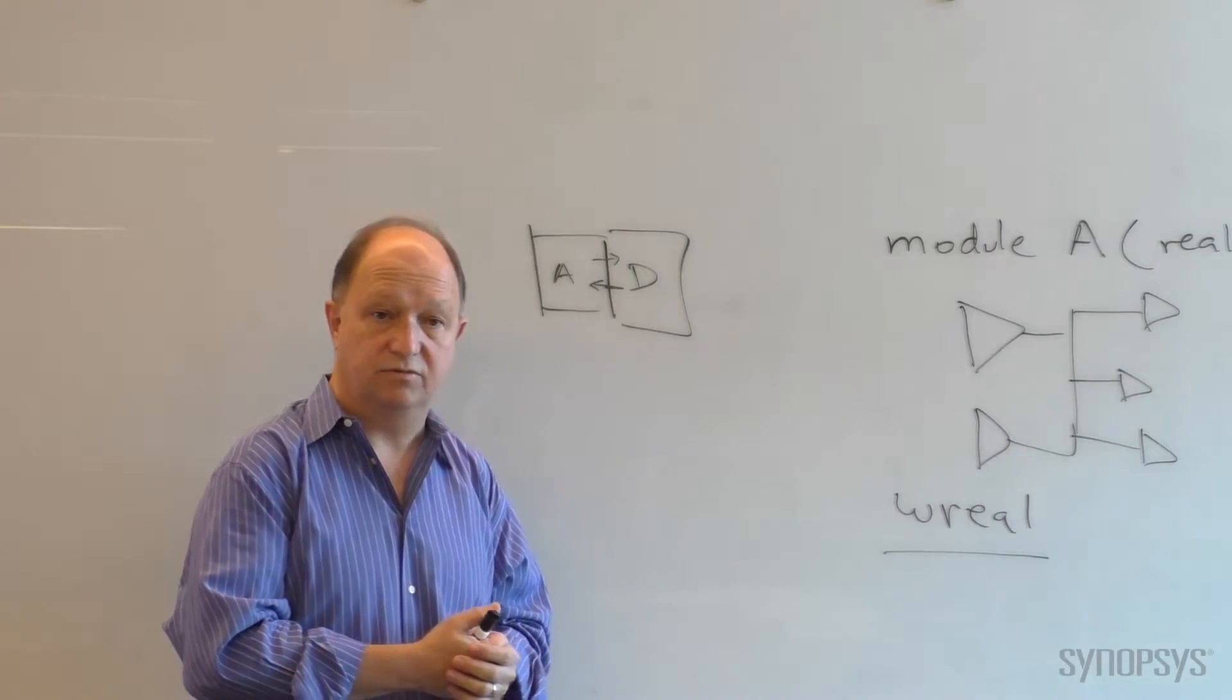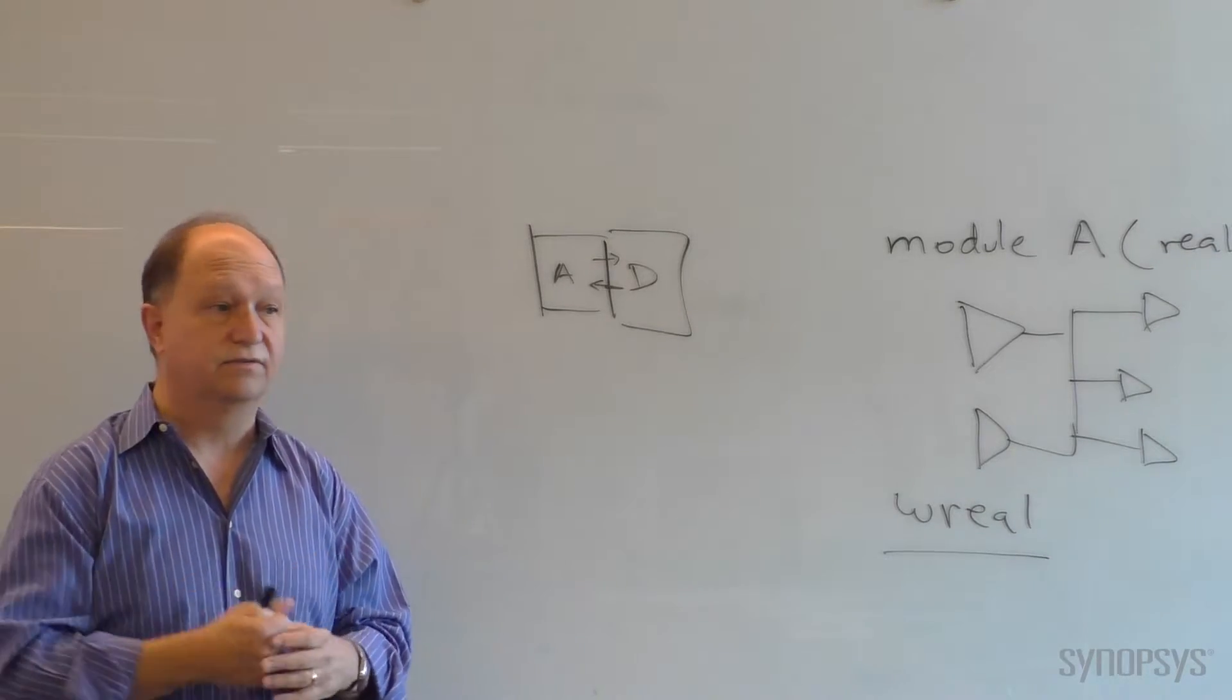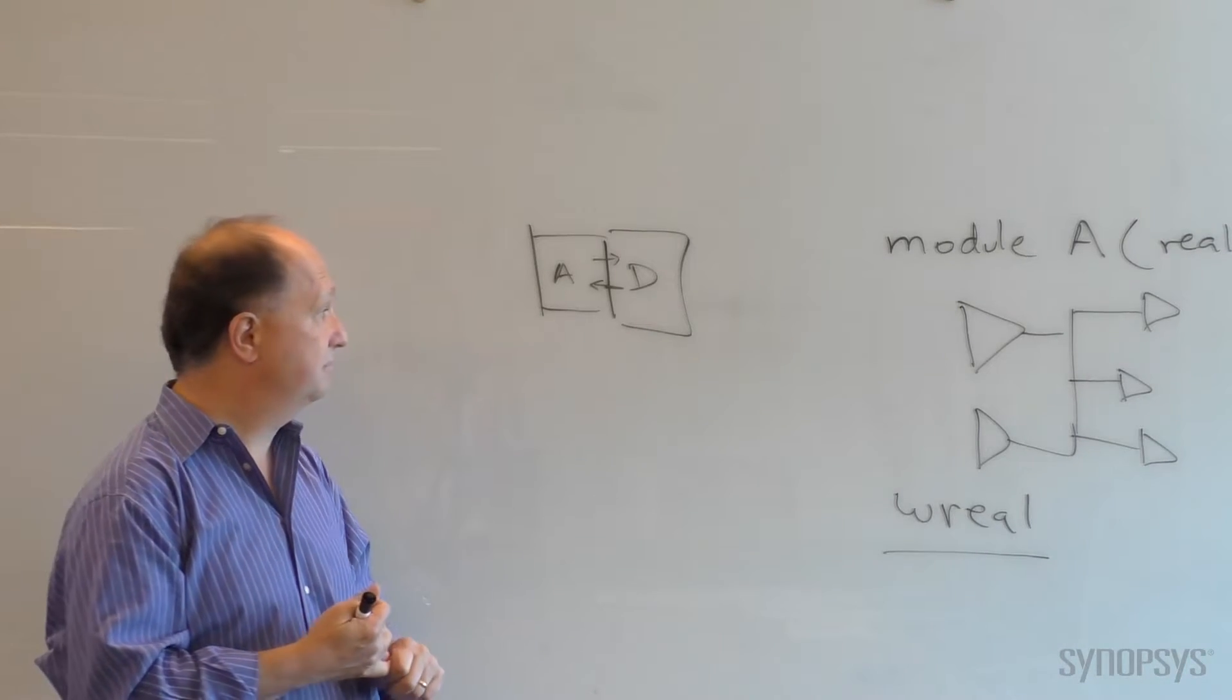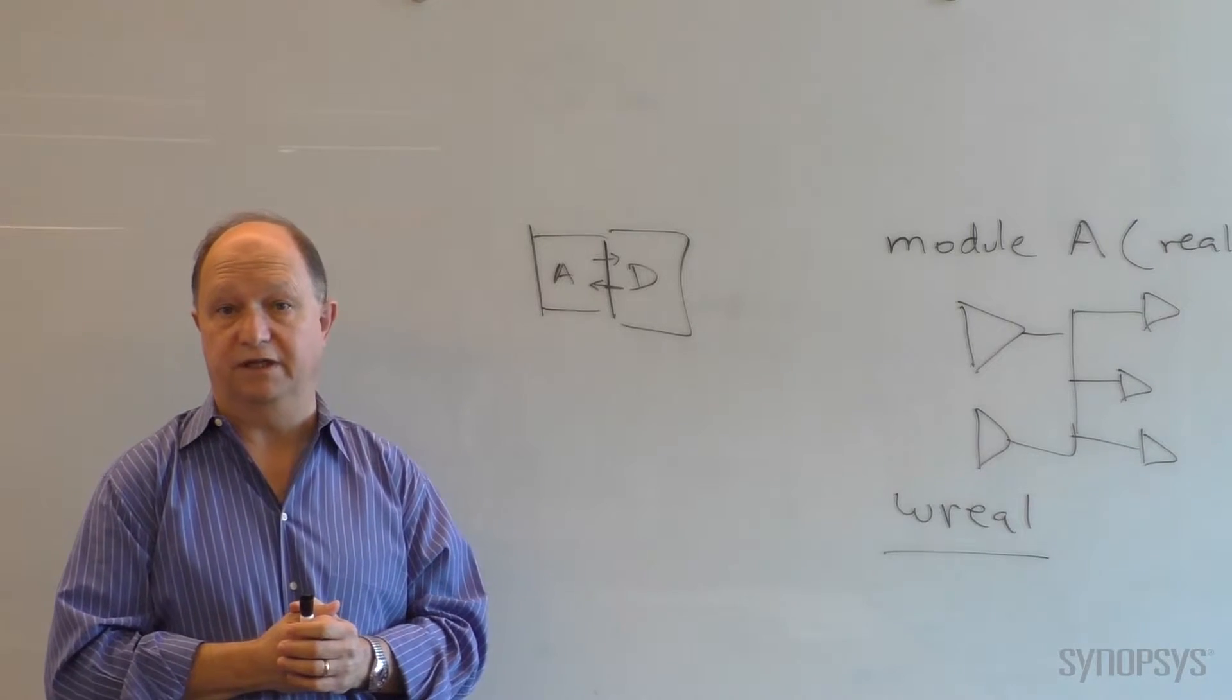There's also fast SPICE engines. There's also AMS, which is a continuous solver, but faster than SPICE, typically 100 times faster. But in today's systems, people need even more speed.